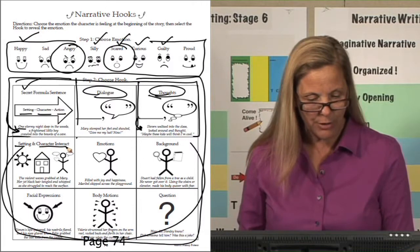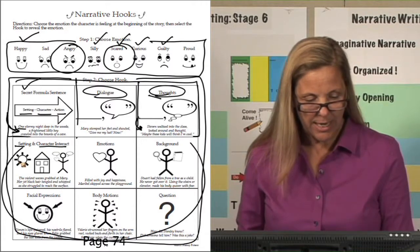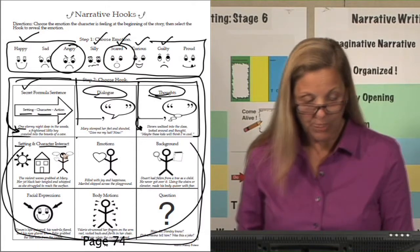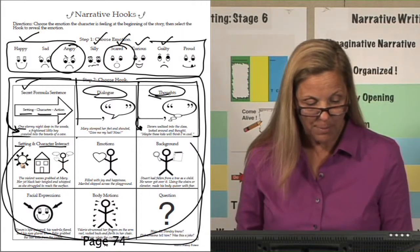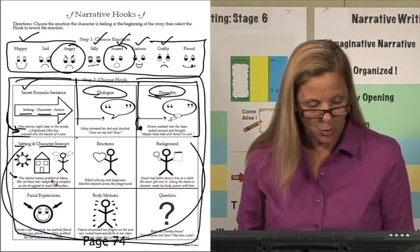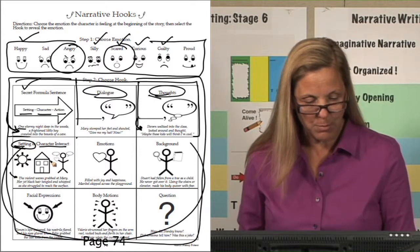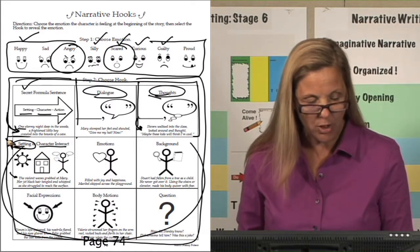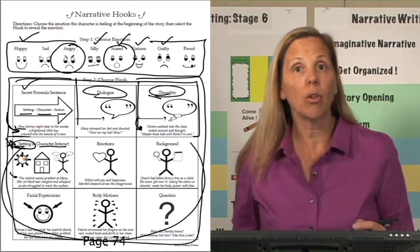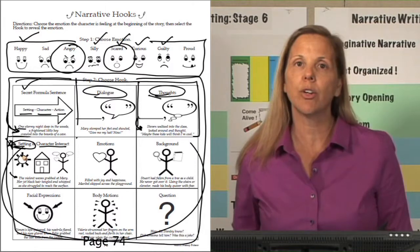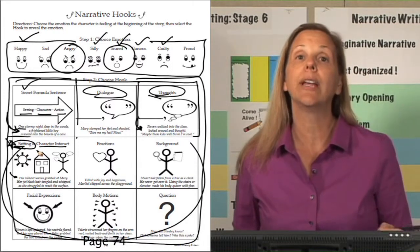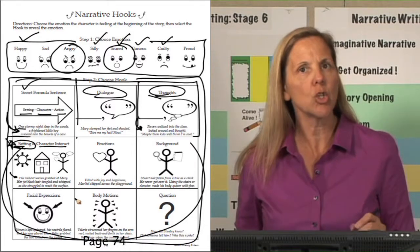Setting and character interact with each other — we want the character to do, say, or reveal through their physical motions how they feel about the setting. For example: 'The violent waves grabbed at Mary; her jet black hair tangled and whipped as she struggled to reach the surface.' The reason we chose this hook is not just because Mary was terrified, but the setting was causing that terror. If your setting is critical to the story, start your hook with that setting and character interacting to reveal how it's crucial.